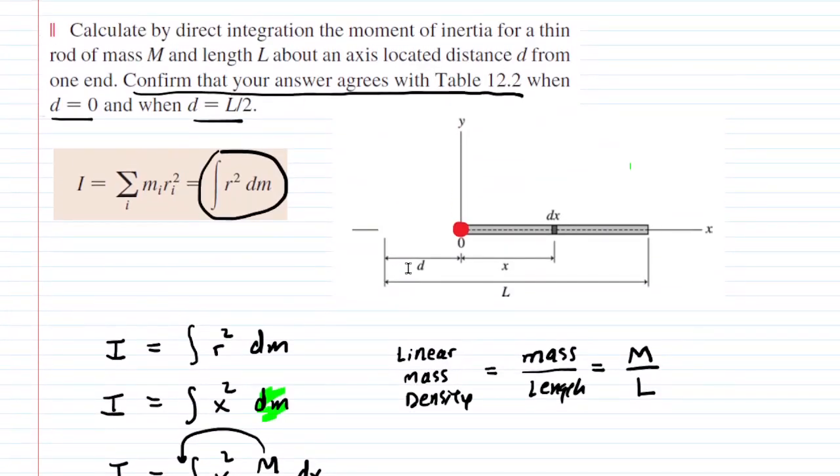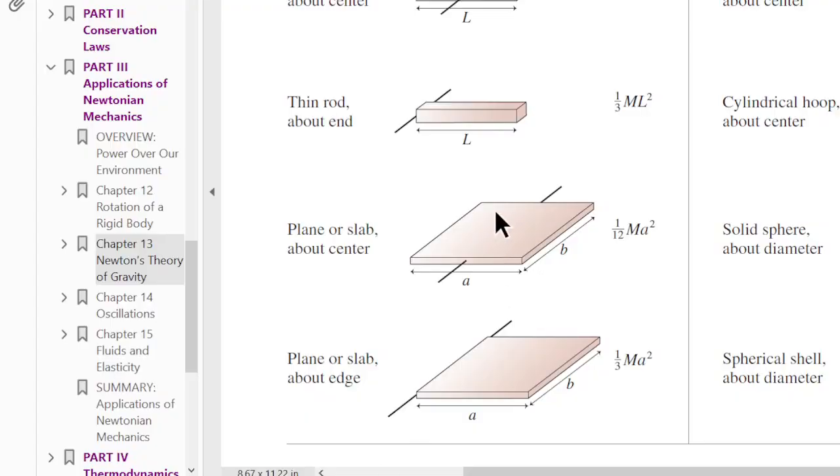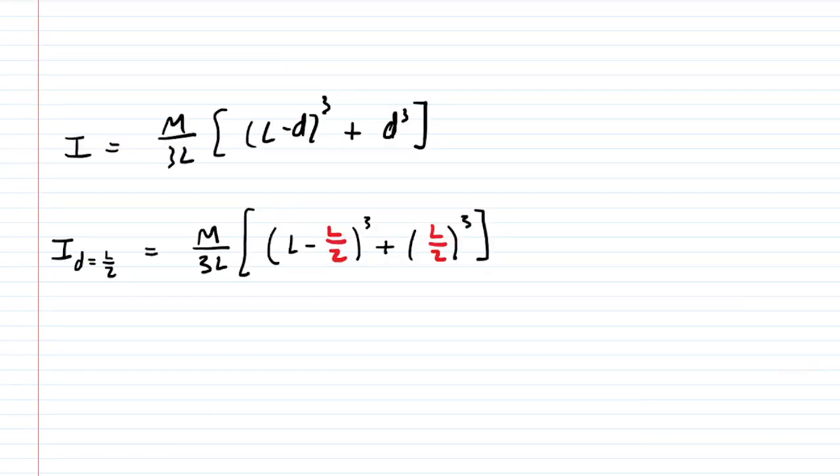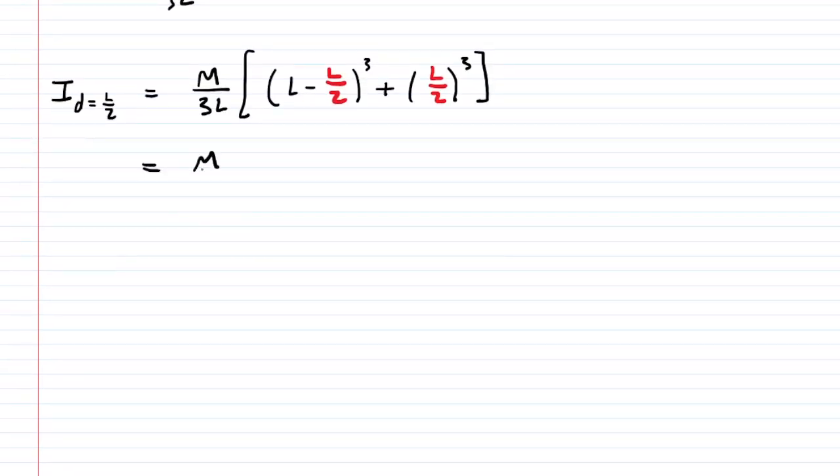Now we can go back and see what the other part is. We're going to plug in l over 2 for d. But to get an understanding of what that means, that would just mean that the axis of rotation was right through the center of the rod. And if we go back to that table, when the axis of rotation is through the center, we should get one twelfth ml squared. So let's find out if that happens by plugging in l over 2 into this boxed equation here. Now we're just going to simplify this a little bit. Inside that first set of parentheses, you have 1l minus half l. So that's just l over 2. And that's cubed. You're actually adding another l over 2 cubed.